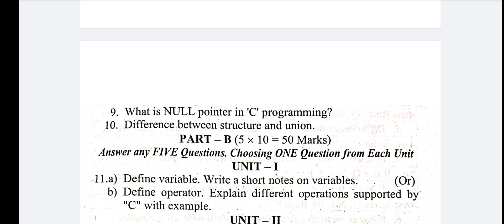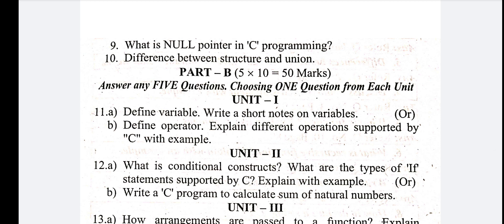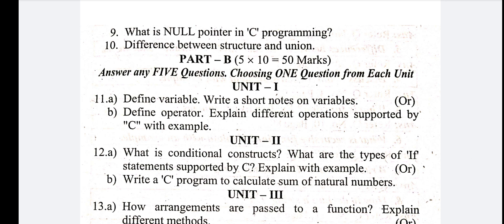Actually there are 10 questions total — 10, out of which you attempt 5. Ninth question: what is a null pointer in C programming? Explain the null pointer in C programming for 5 marks. If you choose the tenth question: the difference between structure and union in C language, explain the difference.